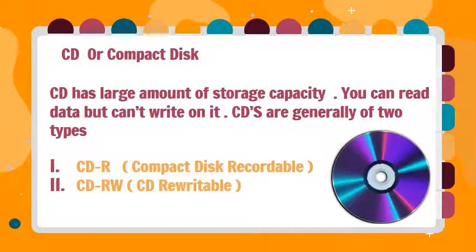CD stands for compact disc. CD has a large amount of storage capacity. You can read data but cannot write on it directly. CDs are generally of two types. CD-R, compact disc recordable — data can only be written once on these disks; you can neither erase it nor write new data on it. The second type is CD-RW, compact disc rewritable — you can store data and also erase it.